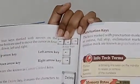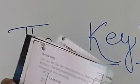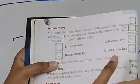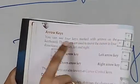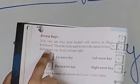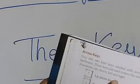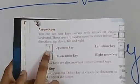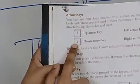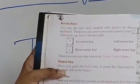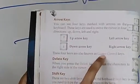Now, arrow key. You can see 4 keys marked with arrows on the keyboard. The keys marked with arrows are used to move the cursor in 4 directions: up, down, left and right. This is the up arrow key, this one is the down arrow key, left arrow key, and right arrow key. These 4 keys are also known as cursor control keys.